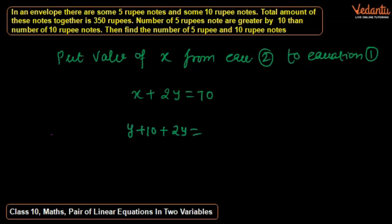Substituting, we get y plus 10 plus 2y equals 70, so 3y equals 60, therefore y equals 20.